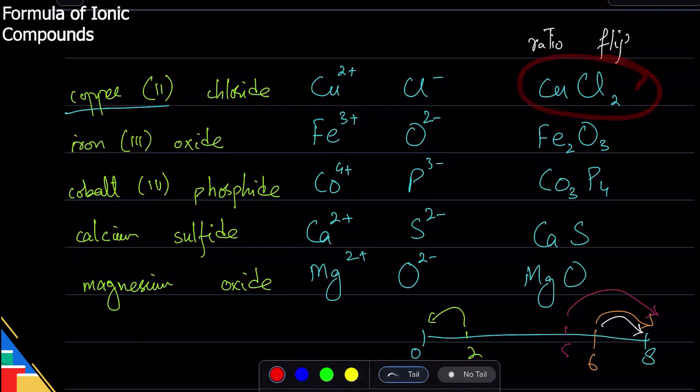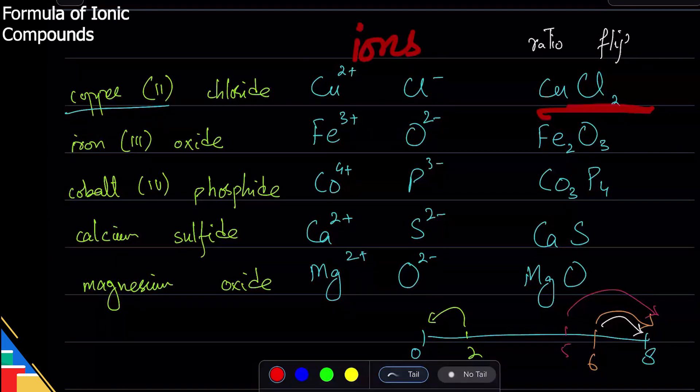Just like when you have the name, you write the ions and then you do ratio flip. If you have the formula, then you first figure out the ions and then you name them. Name has ions, so you figure out the ions first and then write the formula. Just like if you have the formula, you figure out the ions first and then you get back to the name.